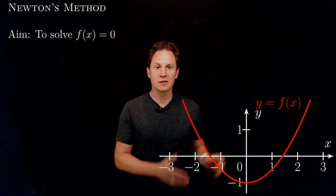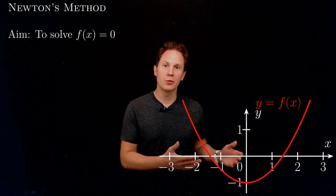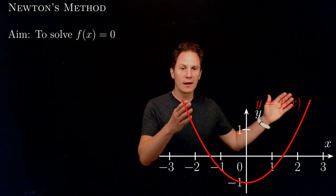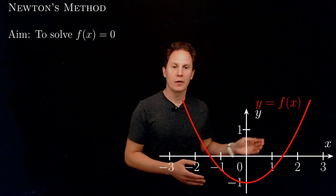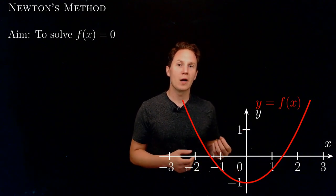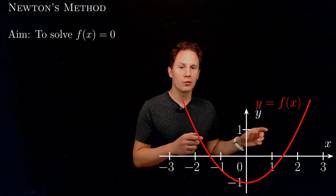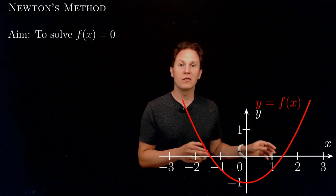Let me show you what the method consists of on this example. First I'll show you graphically. Let's look at the graph of a function, and we're looking for the points where f(x) becomes zero, so those are the points where the graph crosses the x-axis.